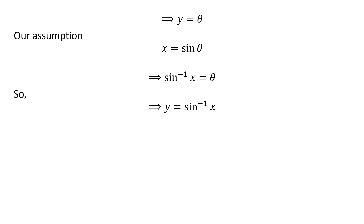So the above statement implies y is equal to inverse of sine of x. Thus simplification of inverse of tangent of x upon square root of 1 minus square of x is inverse of sine of x.